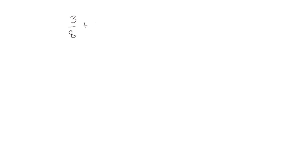Let's look at the first number sentence here: 3/8 plus 3/4. As we've discussed before, we can't add these fractions together the way they are now because the units are different. The first fraction has units of 8ths, and the second one has units of 4ths.